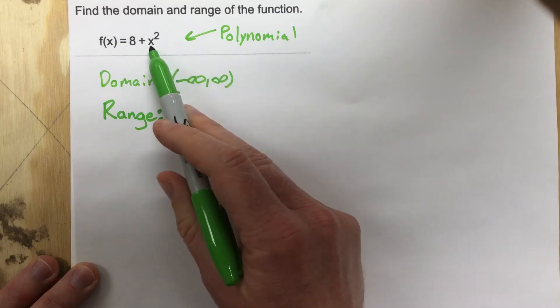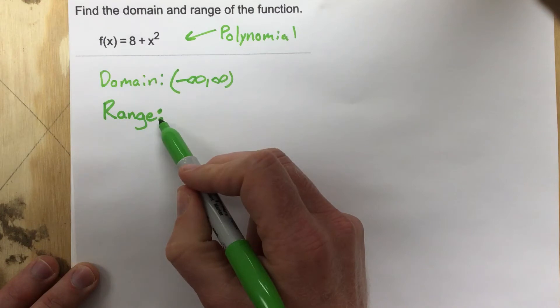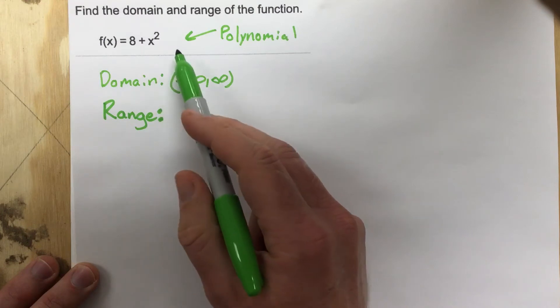The domain is pretty easy. I can plug anything into it. But what is the lowest range value or the highest range value for this polynomial?